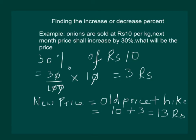It is worth noticing that in the same question, if the price decreases by 30%, we follow almost the same steps. We calculate 30% of rupees 10 to find how much the decrease in price would be, which comes out to be rupees 3. But the new price would be old price minus the decrease, so that would be 10 minus 3, which equals 7 rupees in case the price was decreasing.